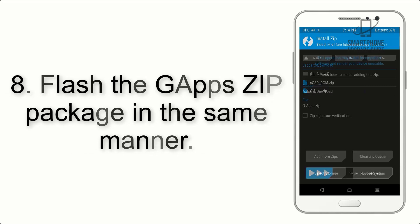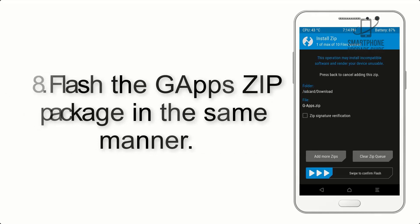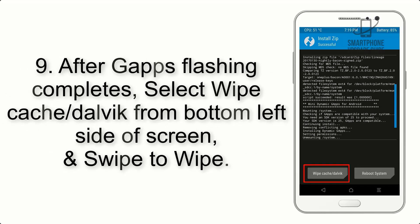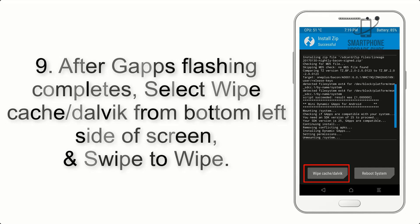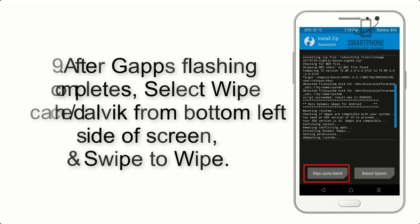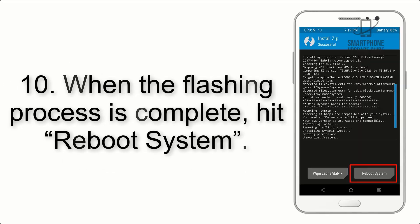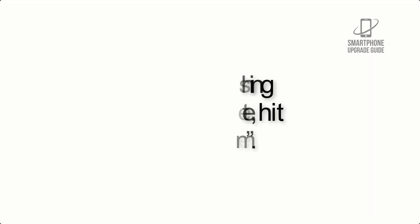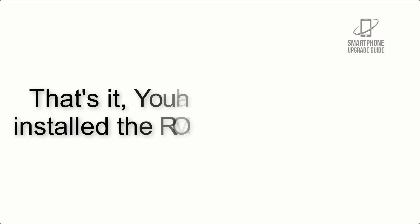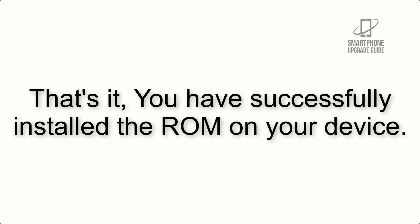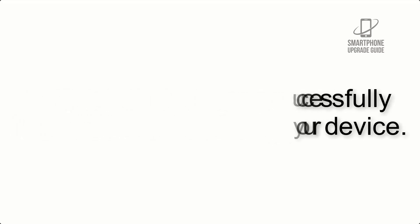Step 8: Flash the GApps zip package in the same manner. Step 9: After GApps flashing completes, select Wipe Cache and Dalvik from the bottom left side of the screen and swipe to wipe. Step 10: When the flashing process is complete, hit Reboot System. That's it — you have successfully installed the ROM on your device.